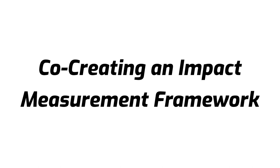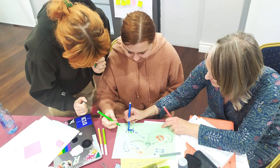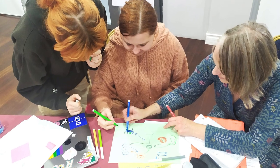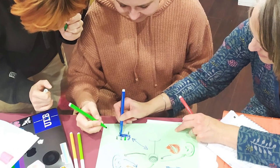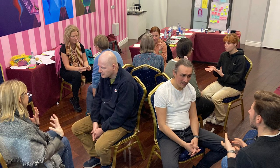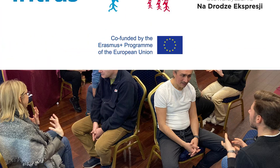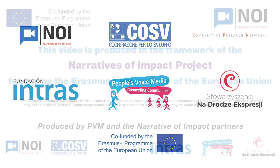Co-creating impact measurement: an extremely effective way to implement impact measurement in your organisation is to co-create and design it with everyone in the organisation — managers, staff and people who use the services. This way you can create effective engagement and ownership of an impact measurement process, as well as ensuring that the quality indicators you are measuring against are relevant and the methods that you use are accessible to all.